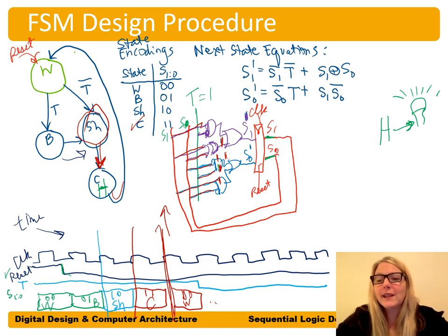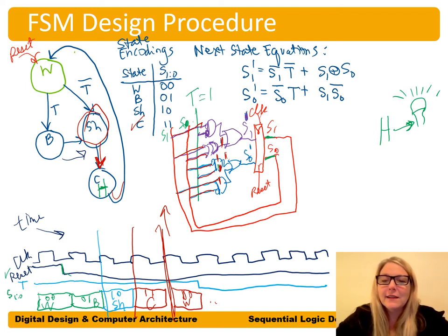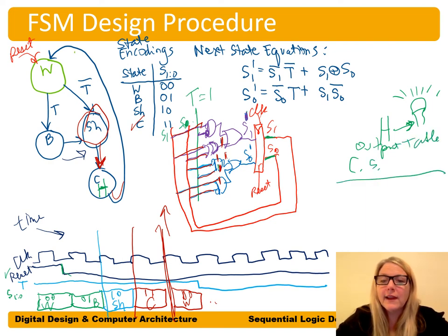We label the output within the current state circle on the state diagram. We can also put H onto our timing diagram — H would assert during the class state, going high on the clock edge entering 11 and staying high for that state duration.